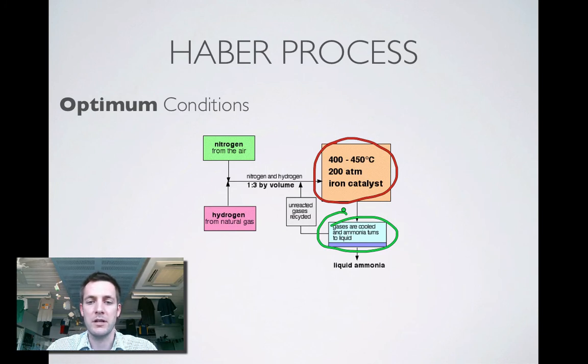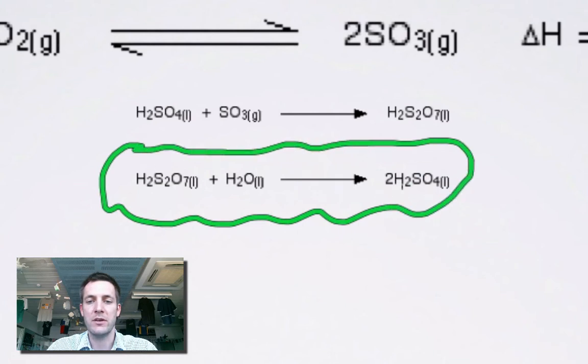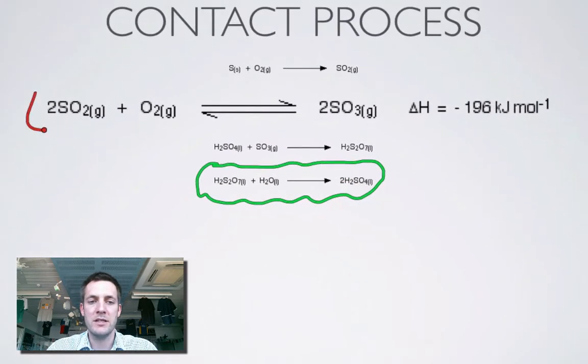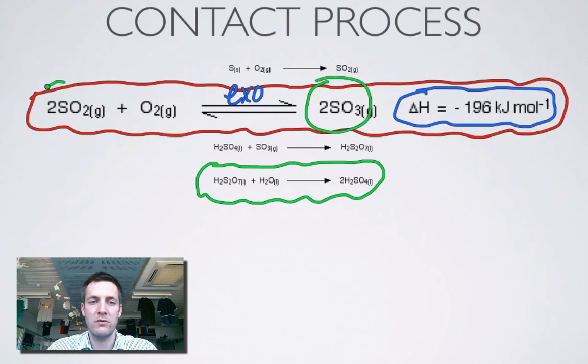Here's another very important process used in industry, it's called the contact process. Although there's lots of steps here, the most important one really is the one that makes sulfuric acid. Most important in terms of making money, because sulfuric acid is a very important feedstock chemical. But in terms of equilibrium, this is the one we're focusing on: 2SO2(g) + O2(g) ⇌ 2SO3(g), ΔH = -196 kJ mol⁻¹. We can see from this enthalpy change that the forward reaction is exothermic. We should be able to see that there's fewer moles of gas on the right than there are on the left.